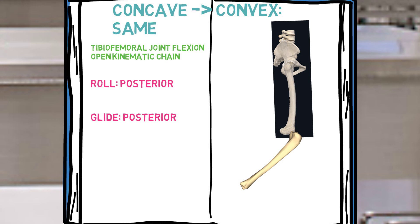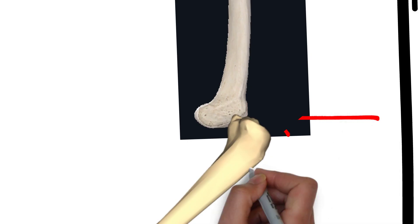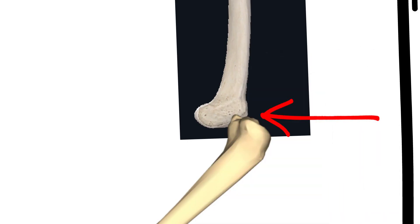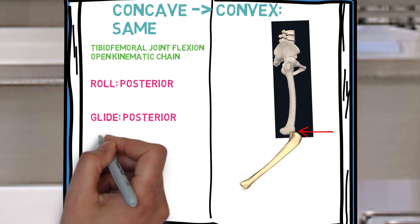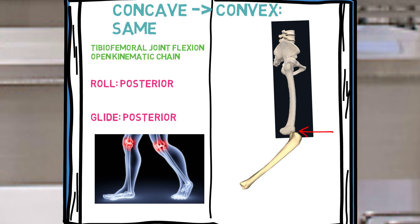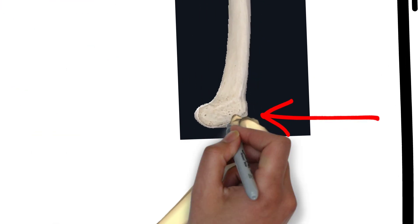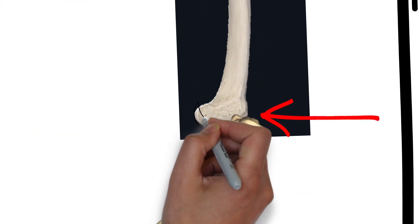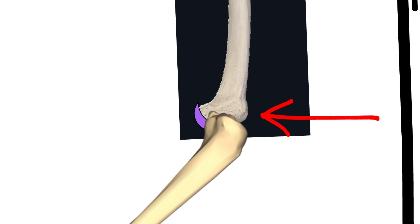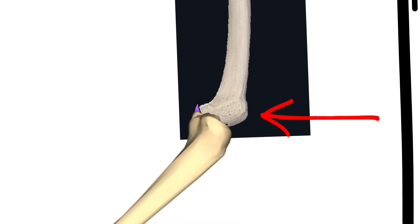Here is a concave tibia moving on a convex femur. If arthrokinematically there is only a posterior roll occurring, the tibia will sit too far anteriorly and will probably irritate the anterior joint structures. Also, once again, there is all that space around the distal femur that has to be occupied. So we need a conjunct posterior glide to keep the tibia aligned with the femur.